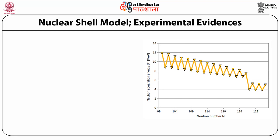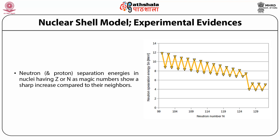We still continue with experimental evidences in support of magic numbers. On the right-hand side a picture shows the neutron separation energy as a function of neutron number for various nuclei. The neutron separation energy goes up and down regularly, and the observation is that neutron and proton separation energy in nuclei having Z or N as magic numbers shows a sharp increase compared to their neighbors.